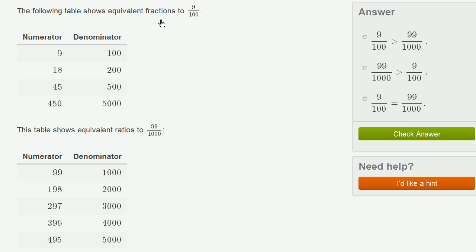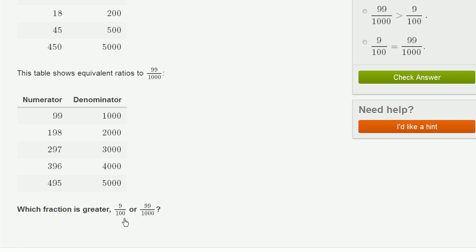The following table shows equivalent fractions to 9 over 100. This table shows equivalent fractions to 99 over 1,000. They ask us which fraction is greater: 9 over 100 or 99 over 1,000?